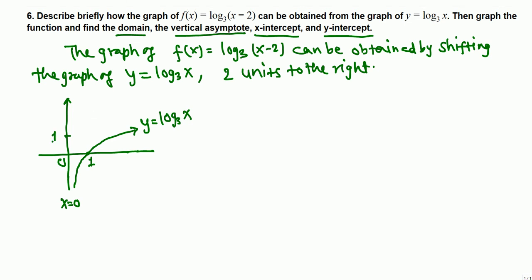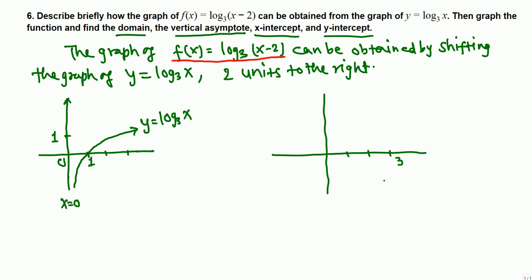Now we graph the given function f(x) = log₃(x-2). We need to shift the base graph 2 units to the right. The vertical asymptote shifts 2 units, and the point (1, 0) moves to (3, 0). The graph retains the same shape.